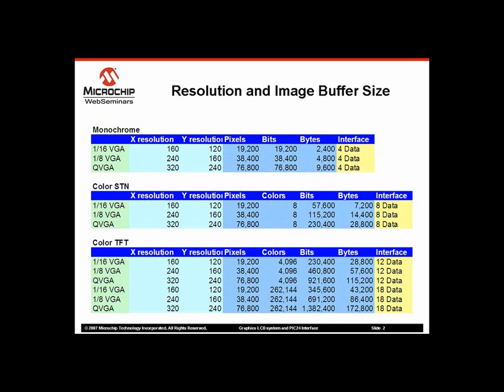You can see that the color QVGA resolution display requires a significant amount of data RAM and lots of data movement. Because of this, traditionally color graphics is considered to be a high-end 32-bit MCU domain application. However, the Microchip library makes it possible to do high-quality graphics on a low-end 16-bit microcontroller.